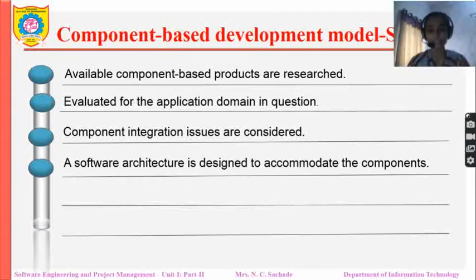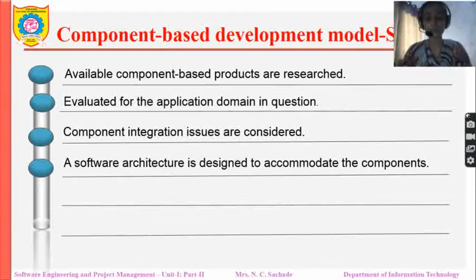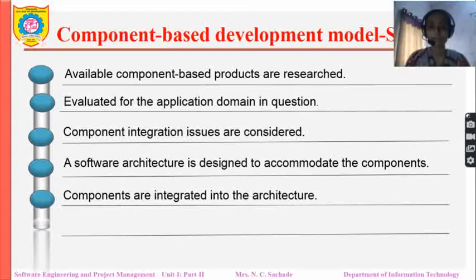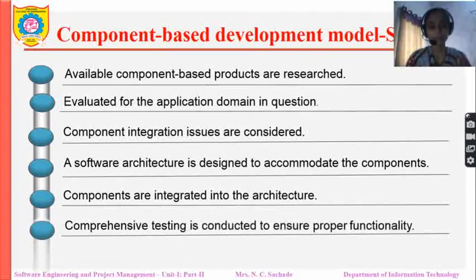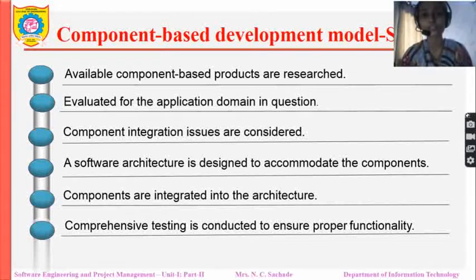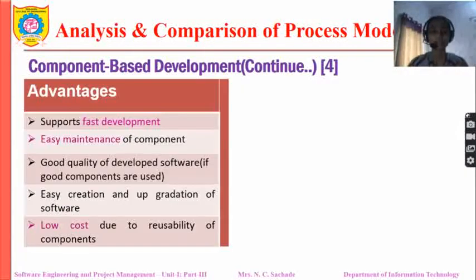Next, software architecture is designed to accommodate the components. Once the components are placed, a design is prepared and components are added to the actual architecture. Finally, comprehensive testing is conducted to ensure that functionality is proper. This is how we go about developing component-based software.